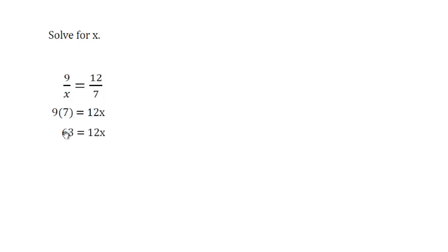12 is not going to go evenly into 63 but I'm going to divide both sides by 12. 12 divided by 12 leaves me with 1x. And 63 divided by 12, both have the common factor of 3. So I divide 3 into 63 to get 21 and 3 into 12 to get 4. So my answer is 21 fourths.